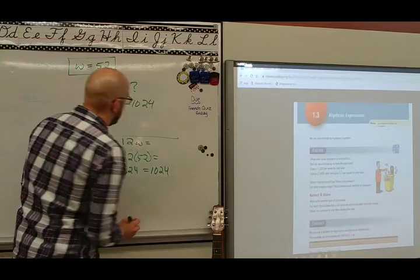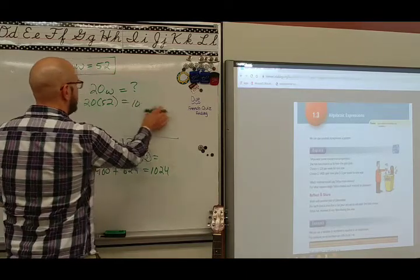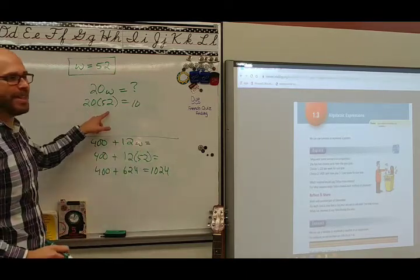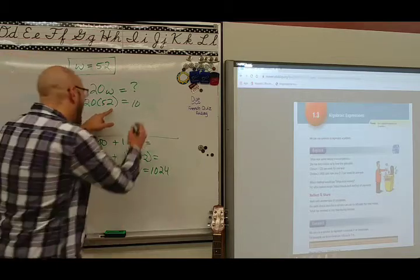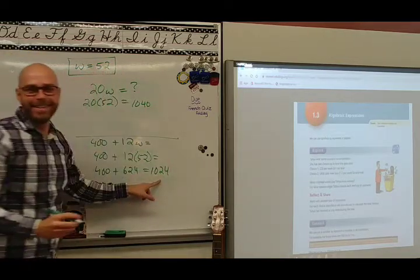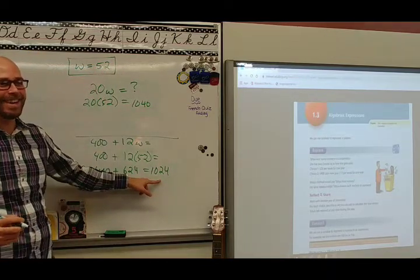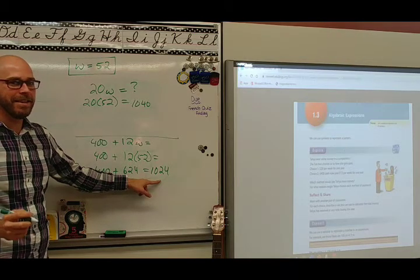You did the first one wrong. Oh, did I do the first one wrong? Oh, I did do the first one wrong. Because 20 times 50 is 1,000. 20 times 2 is 40. I was thinking of this one already. I got ahead of myself. Good thing you caught me, eh?